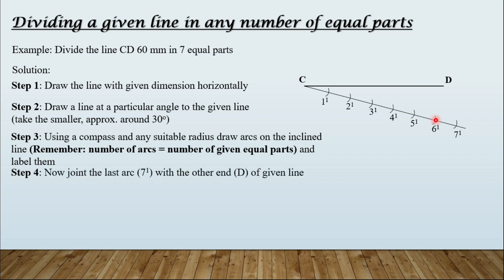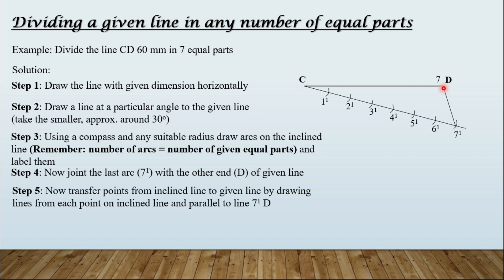Now join the last arc — point seven dash — with the other end of the line D, and name it seven. Then transfer points from the inclined line to the given line by drawing lines from each point on the inclined line parallel to the line joining seven dash and D. Using a roller scale parallel to that line, transfer all points onto the given line CD. You have now divided the given line CD into seven equal parts; you can measure them and they will all be the same length.